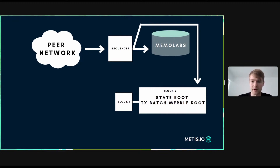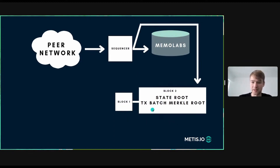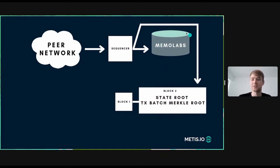This is layer one right here. We have this two-block blockchain — in this case, this is layer one. The data gets posted to MemoLabs, the transaction batch Merkle root gets posted to MemoLabs, and then it also gets posted to layer one.